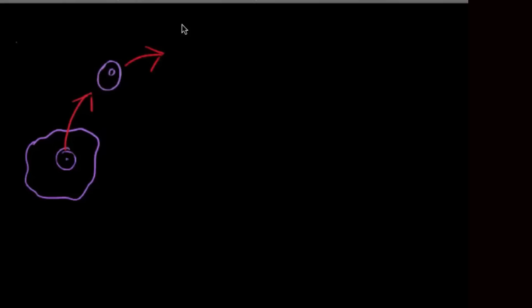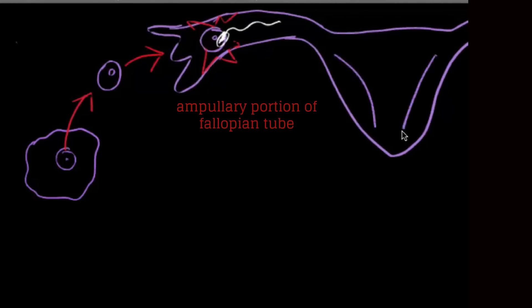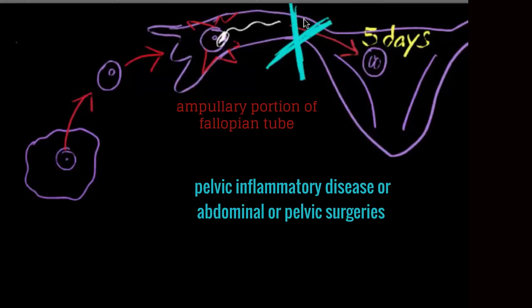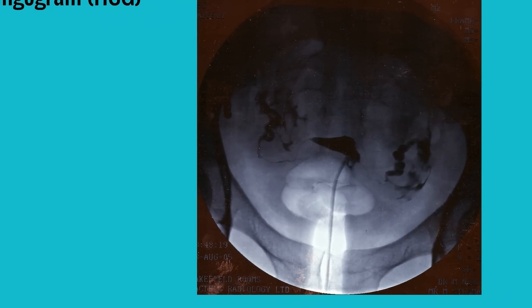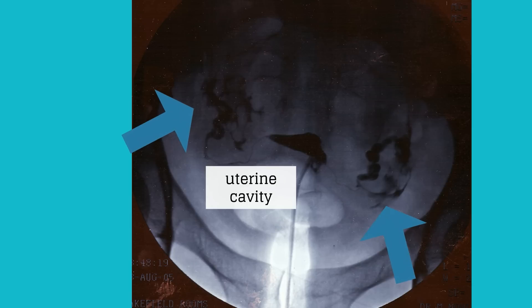After ovulation, the oocyte is picked up by the fallopian tube and fertilization occurs in the ampullary portion of the fallopian tube. The embryo then enters the endometrial cavity approximately 5 days after fertilization. This process can be impaired by prior pelvic inflammatory disease or abdominal or pelvic surgeries. A hysterosalpingogram (HSG) evaluates fallopian tube patency — contrast dye is injected into the uterine cavity and if the fallopian tubes are patent, the dye travels through both tubes. This HSG demonstrates normal fallopian tubes, with the dye traveling all the way through both of them.